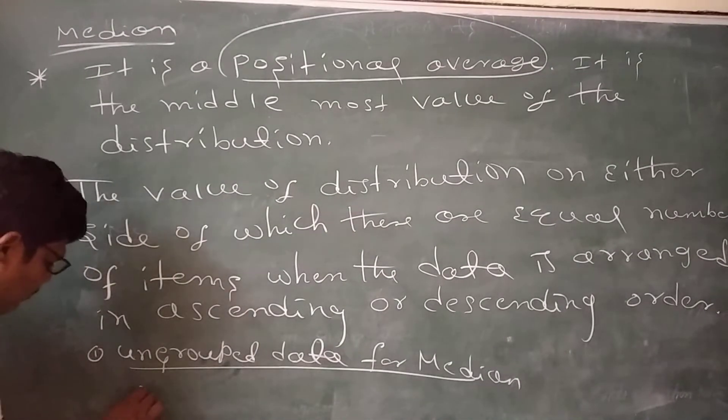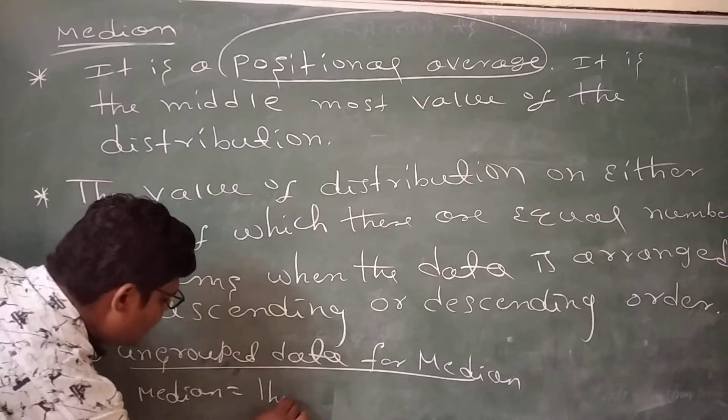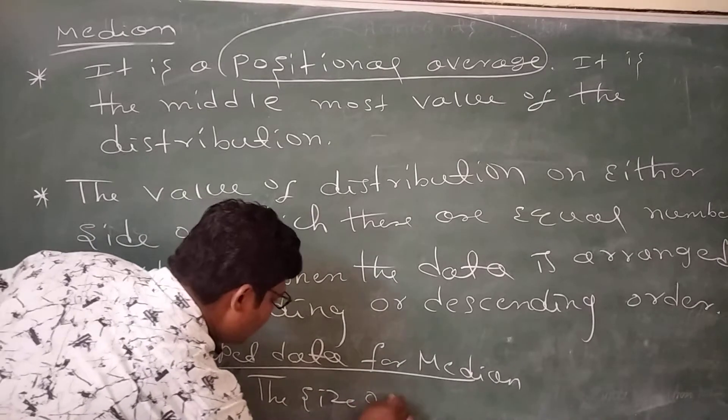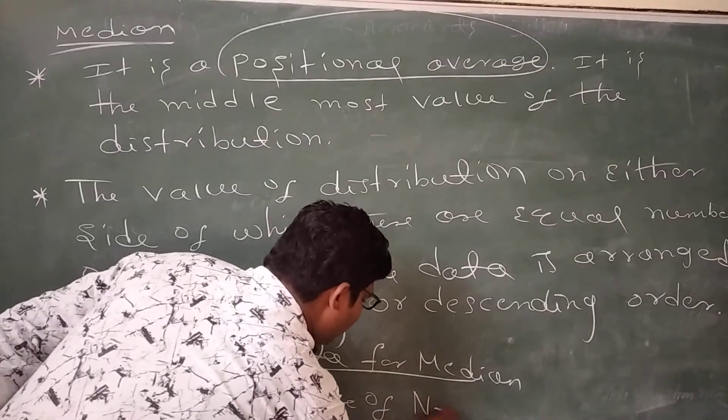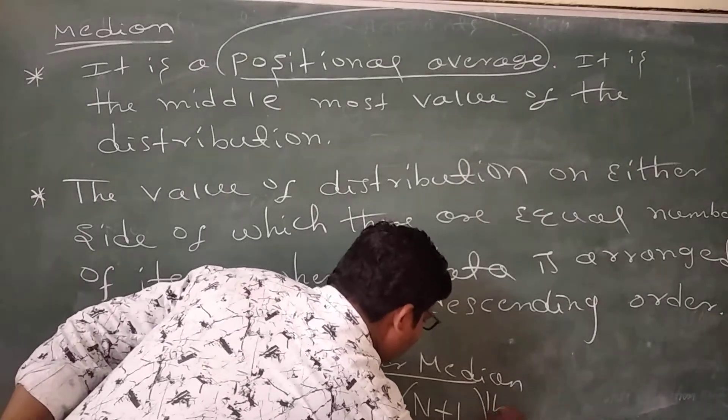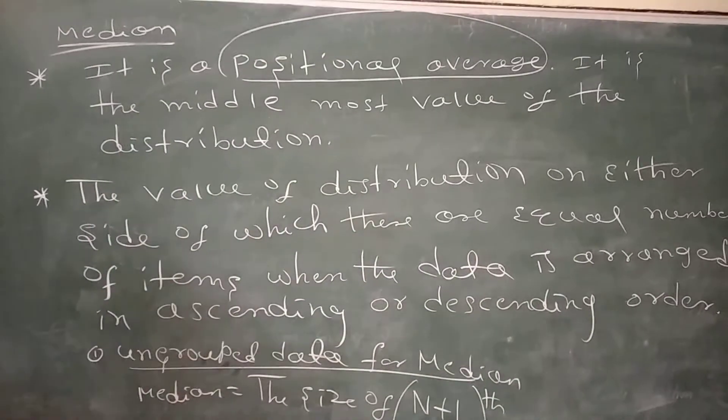The formula is median equals to the size of n plus 1 by 2. The size of n plus 1 divided by 2. This is ungrouped data for median.